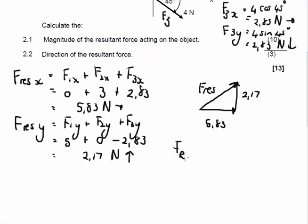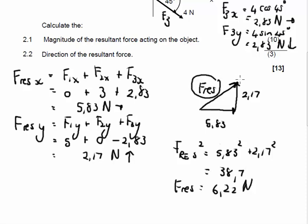So F resultant overall is going to be equal to 5.83 squared plus 2.17 squared. And we get the square root by using our calculators. So 5.83 squared plus 2.17 squared gives you 38.69 or comma 7. You leave the rounded off answer on your calculator. You get the square root of this answer, and you should get your resultant as 6.22 Newton. Now we've calculated the magnitude of F resultant, but we haven't yet calculated the angle.